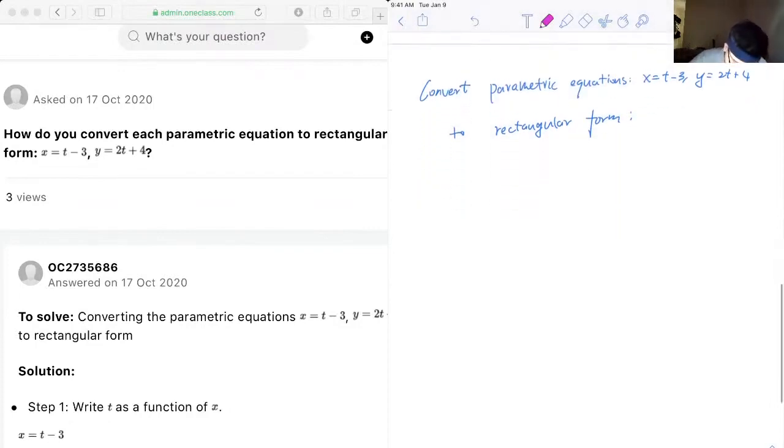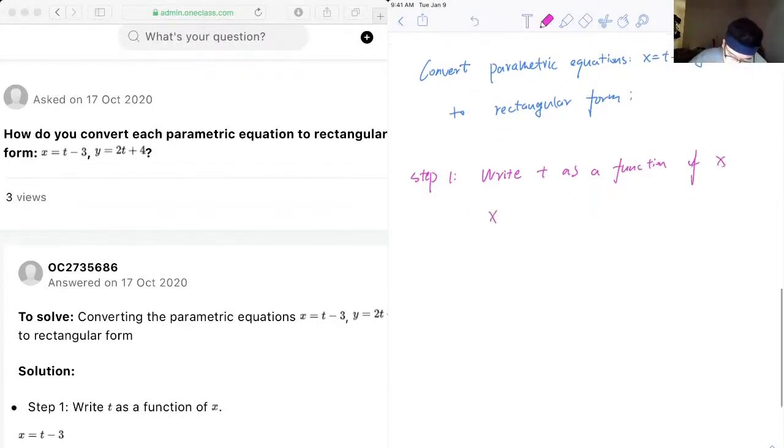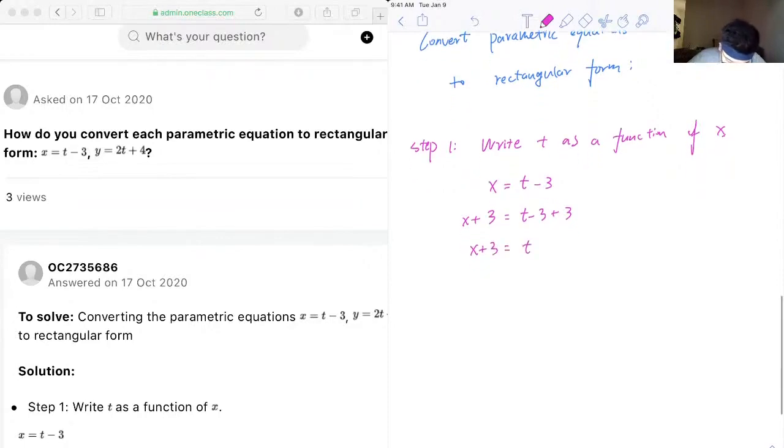Okay, so step one: we need to write t as a function of x. Since we are given x equals t minus 3, we want the equation to be t equal to something. So we add 3 on both sides, so we have x plus 3 equals t minus 3 plus 3, which is x plus 3 equals t. In other words, t equals x plus 3.